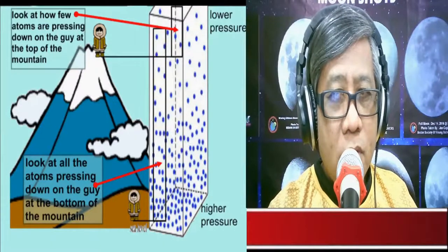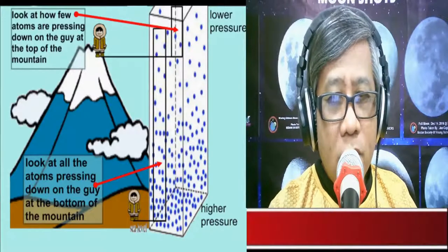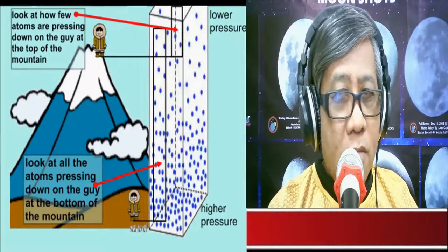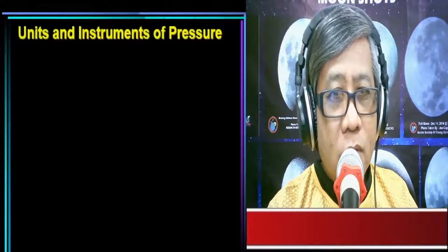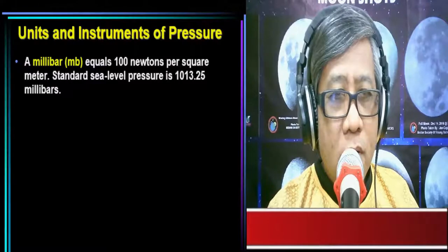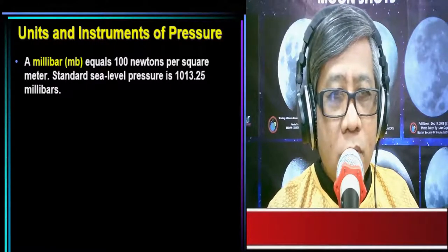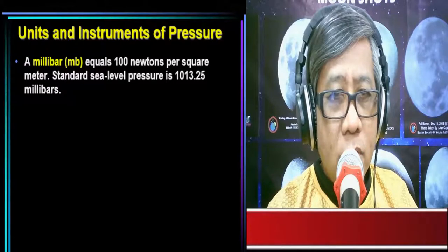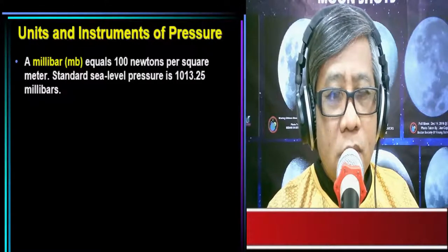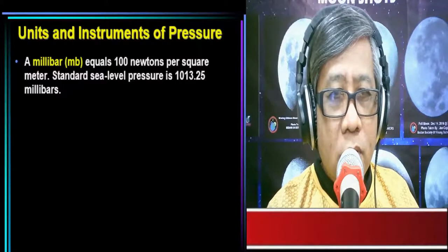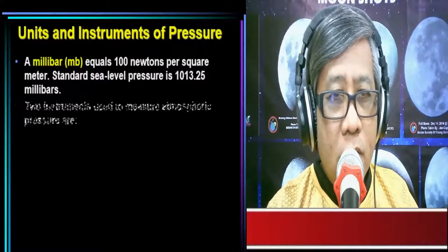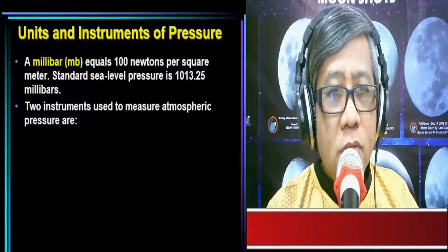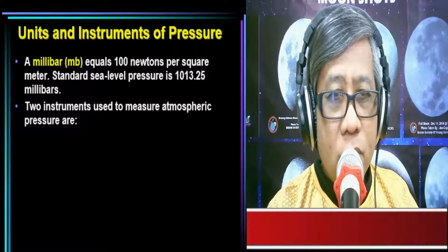The guy on top of the mountain experiences lower air pressure. In measuring air pressure, we consider the following units and instruments. The unit for measuring air pressure is the millibar, or mb. One millibar equals 100 newtons per square meter. The standard sea level pressure is 1013.25 millibars, equivalent to 14.7 pounds per square inch.